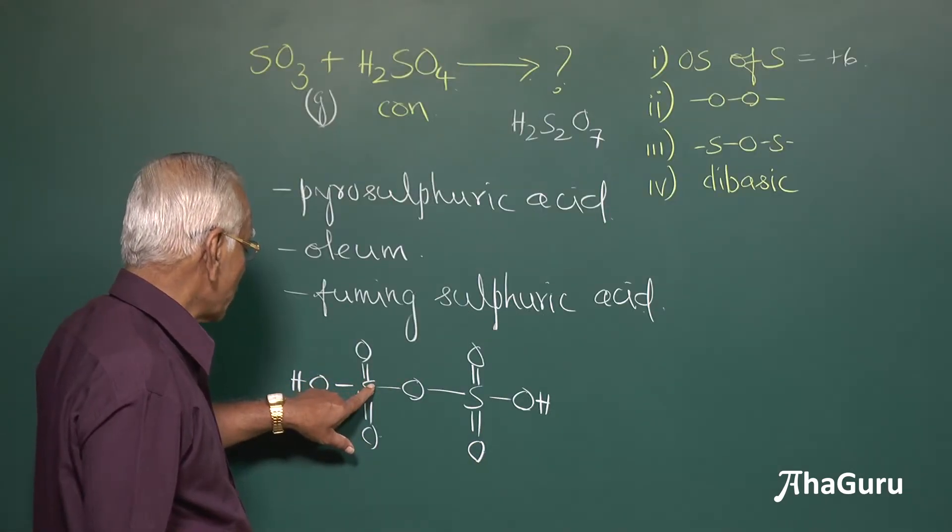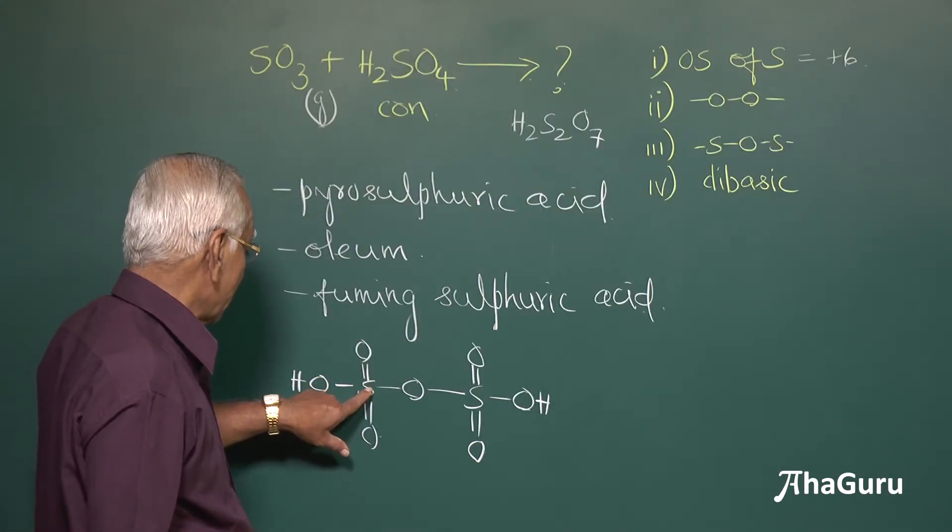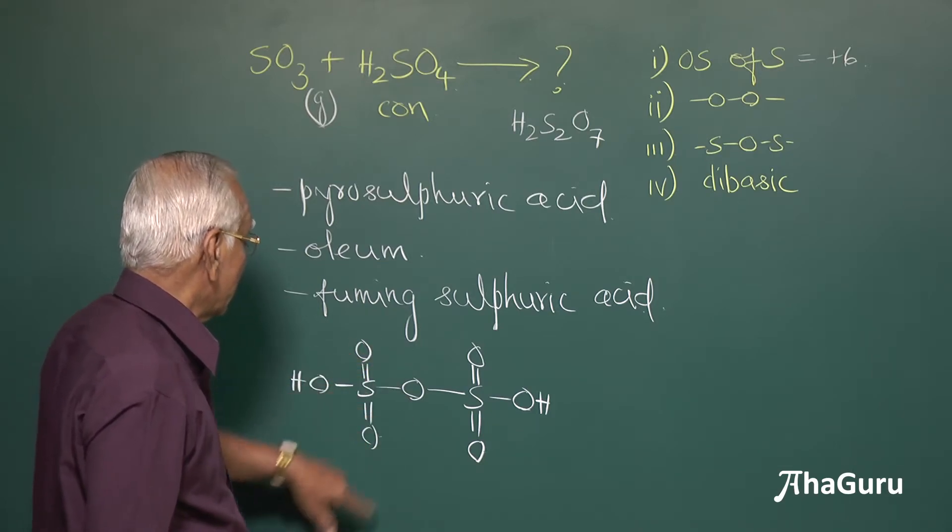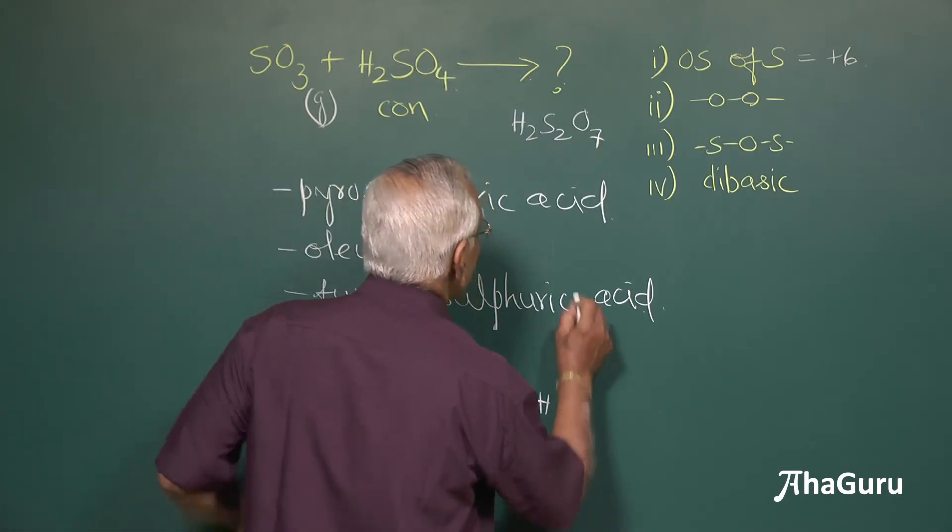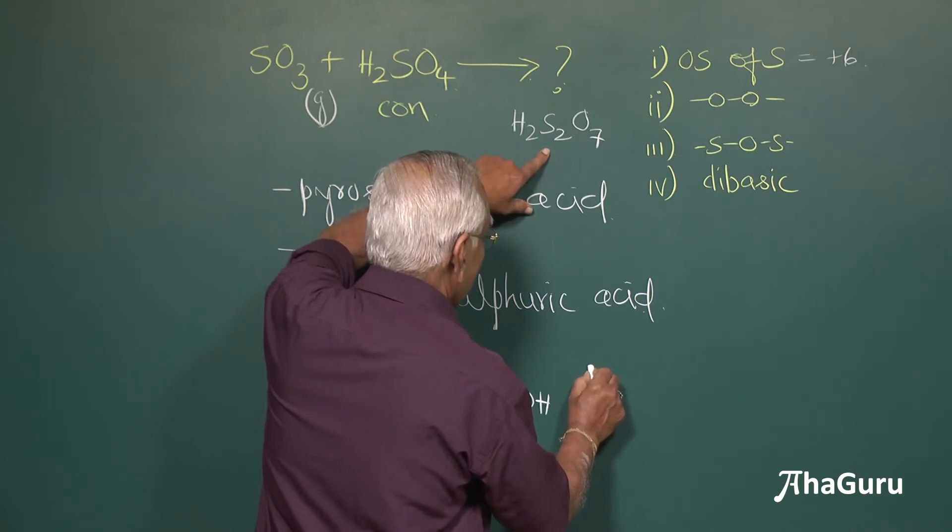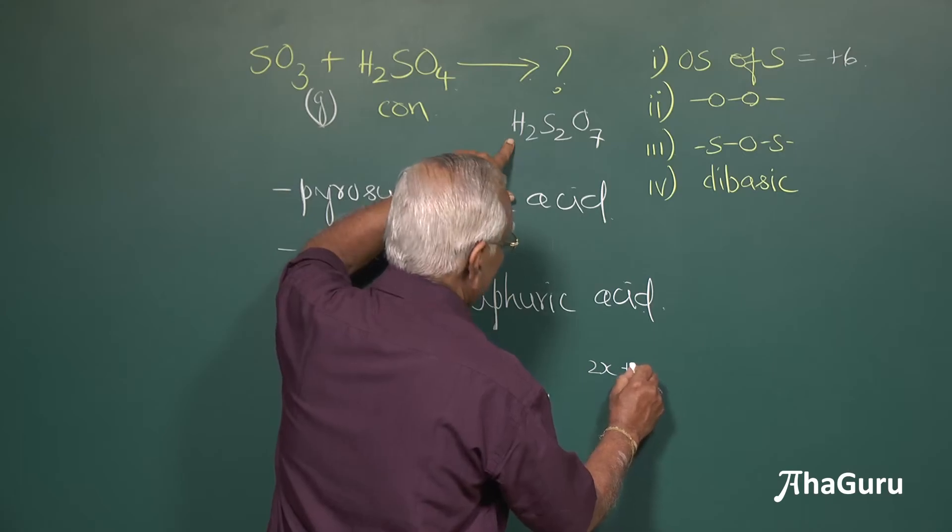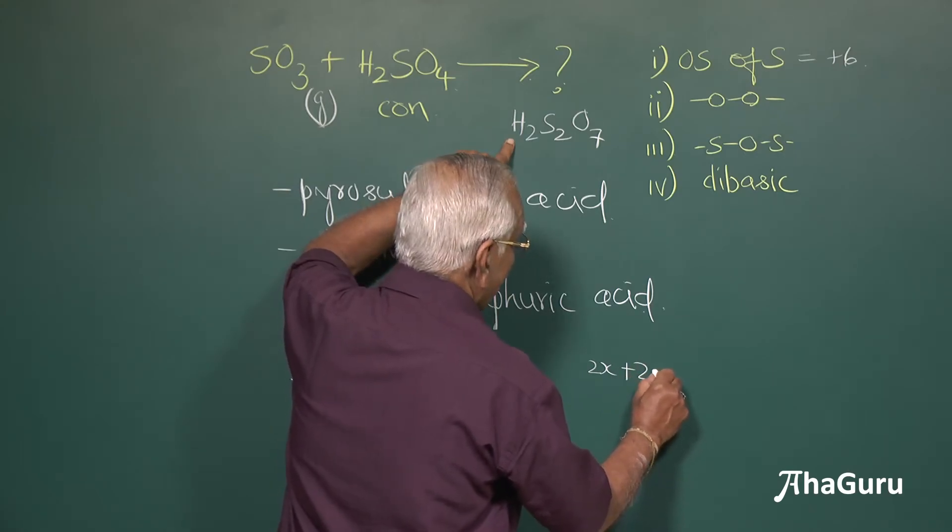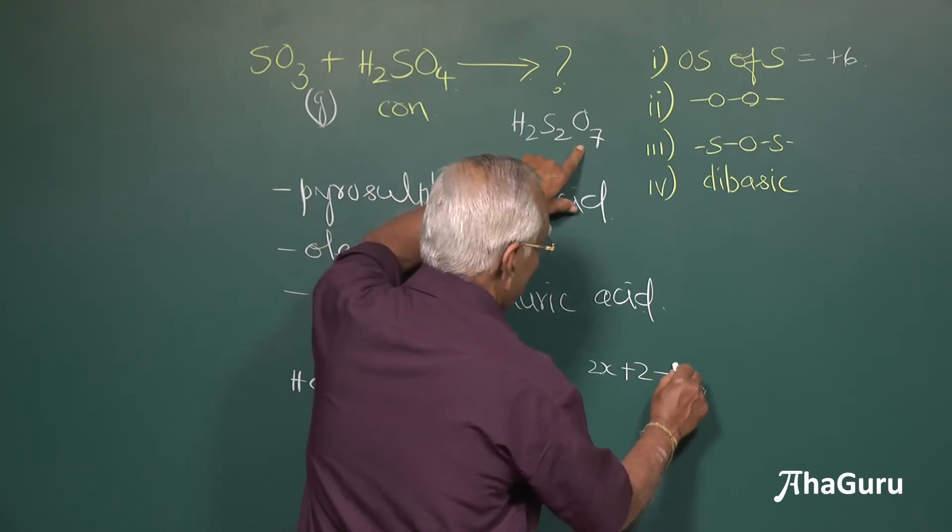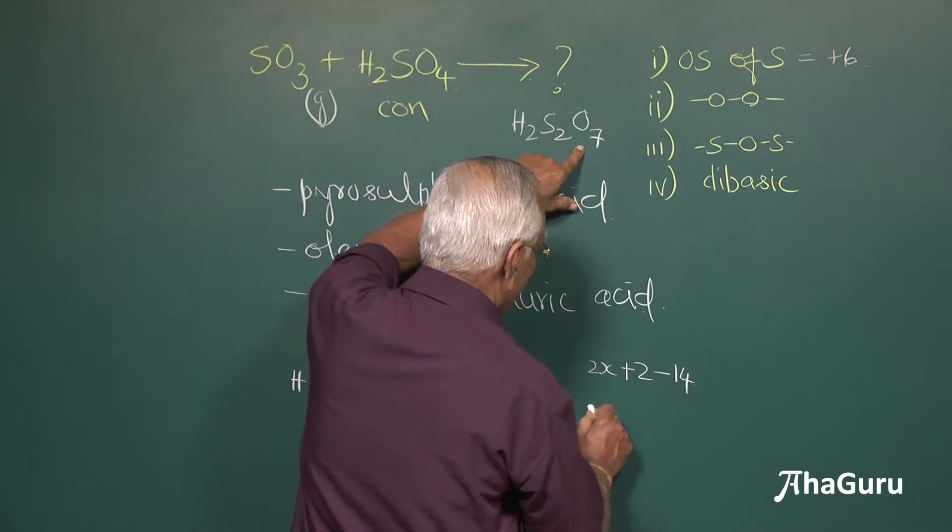Therefore, this is going to be plus 2, only when it is going to be, sorry, plus 6 here, plus 6 and I can identify this, let the oxidation state of sulfur be x here and for 2 sulfur atoms it is 2x here and for hydrogen atom it is plus 1, for 2 hydrogen atoms it is plus 2 and oxygen is going to be minus 2, for 7 oxygen atoms it is going to be minus 2.